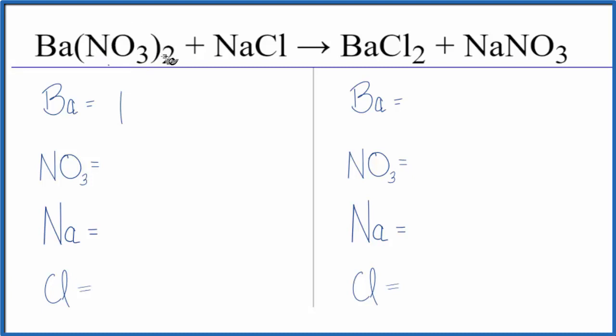I have one nitrate ion times two, that's two nitrate ions, one sodium, and one chlorine. On the product side I have one barium, one nitrate, one sodium, and two chlorines.